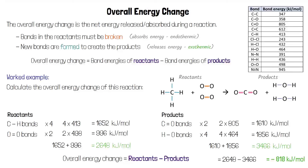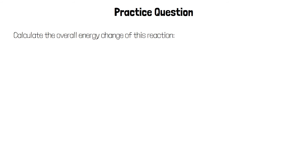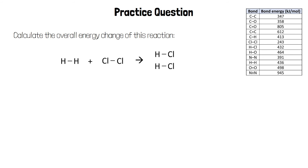Because the overall energy change is negative, that means the chemicals have less energy at the end of the reaction, so energy must have been released — this tells us the reaction is exothermic. Here's a practice question: calculate the overall energy change of this reaction using the bond energies table on the right. You will not need to use all the bonds — just find the ones that are relevant.